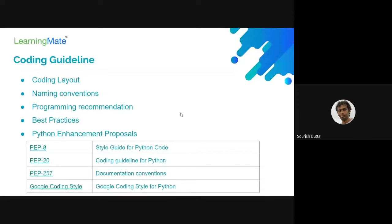Coding guidelines also talk about naming conventions — how we're going to give names to different classes, methods, constants, and variables. Each of them can be given in a different casing style, such as camel casing, snake casing, and other styles.